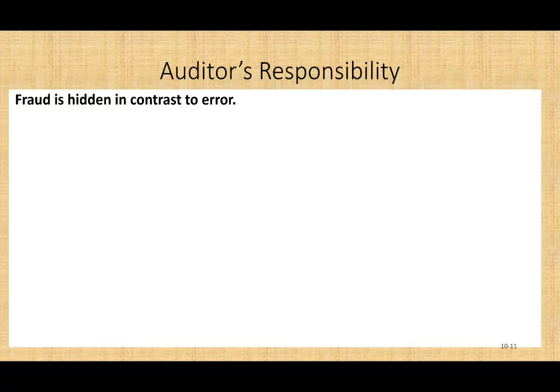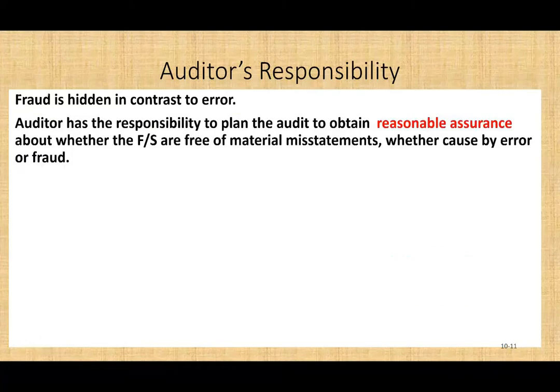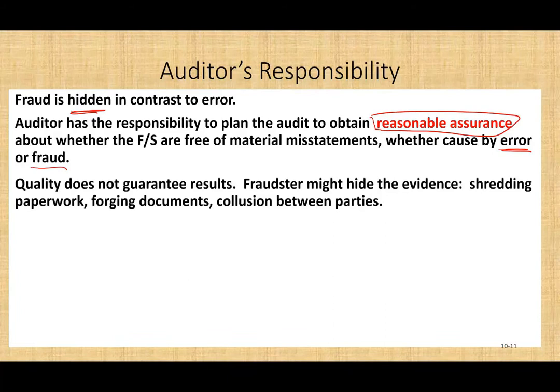So that's the first thing we want to keep in mind. What is the auditor's responsibility? The auditor has responsibility to plan the audit to obtain — the key word is — reasonable assurance whether the financial statements are free of material misstatement, whether caused by error or fraud. The general rule is we have reasonable assurance. Why reasonable assurance? Many reasons. Reasonable assurance because we sample. Reasonable assurance because the fraud is on purpose hidden — it's not like someone commits fraud and they leave the evidence behind. So even though we might perform a quality audit, we cannot guarantee results.